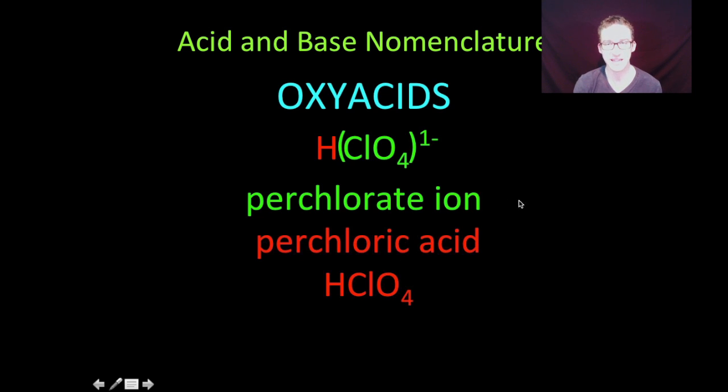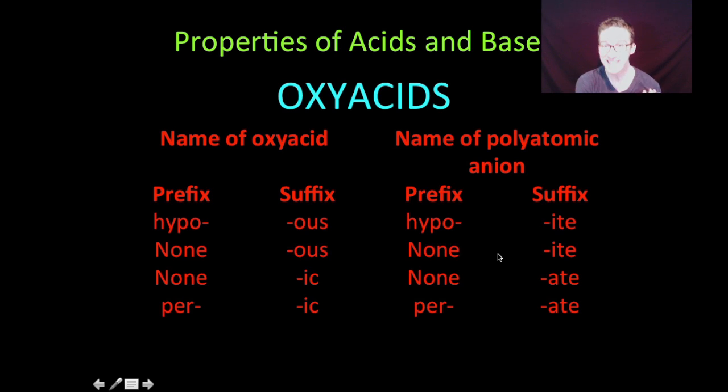So once again, just driving this home, anytime you're given an oxyacid, find the polyatomic ion. Any of the ites in that polyatomic ion become ous's. Any of the ates become ics. Adichitis.